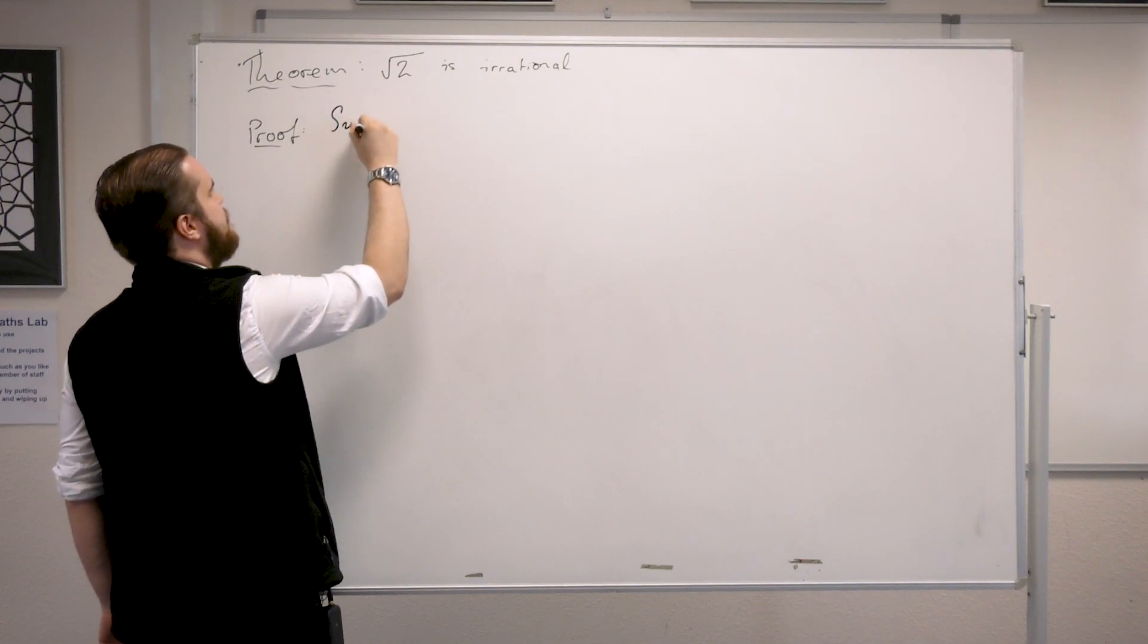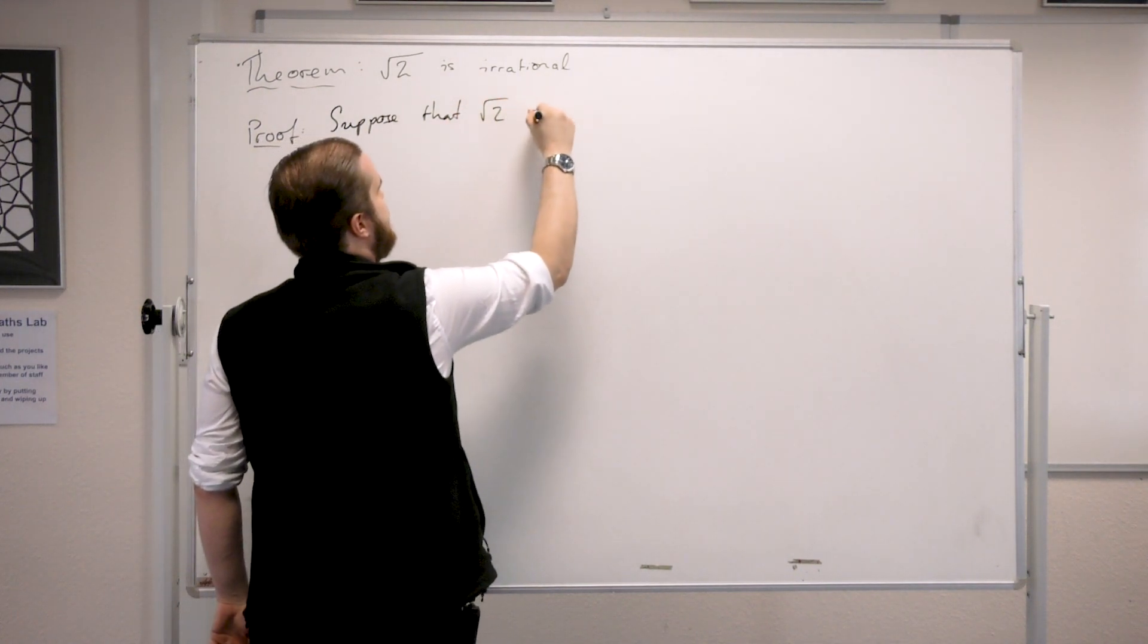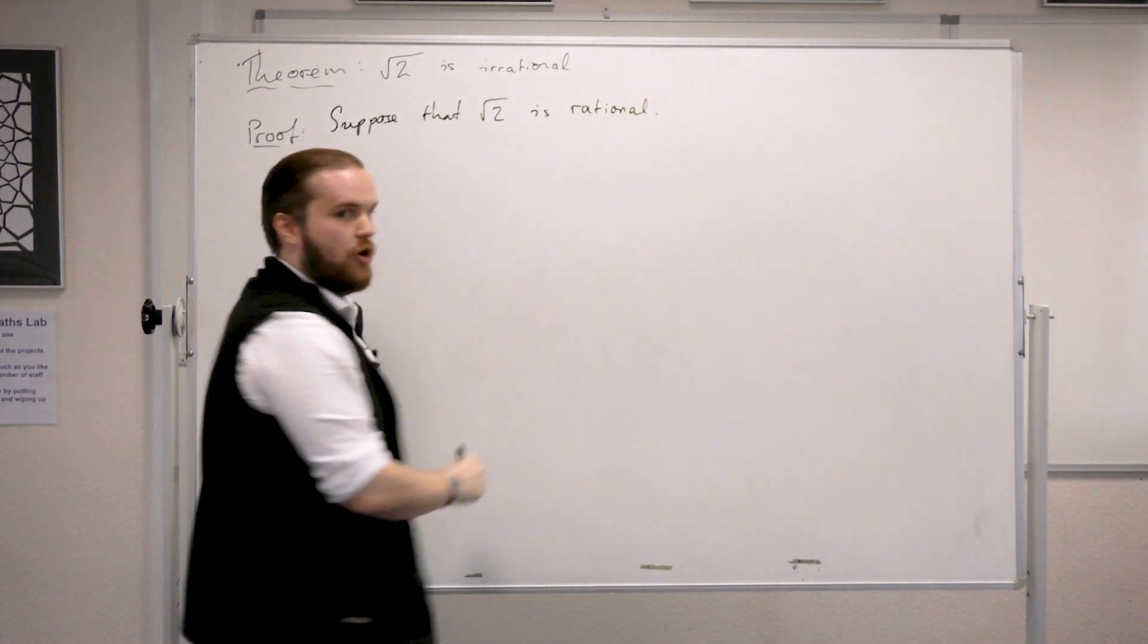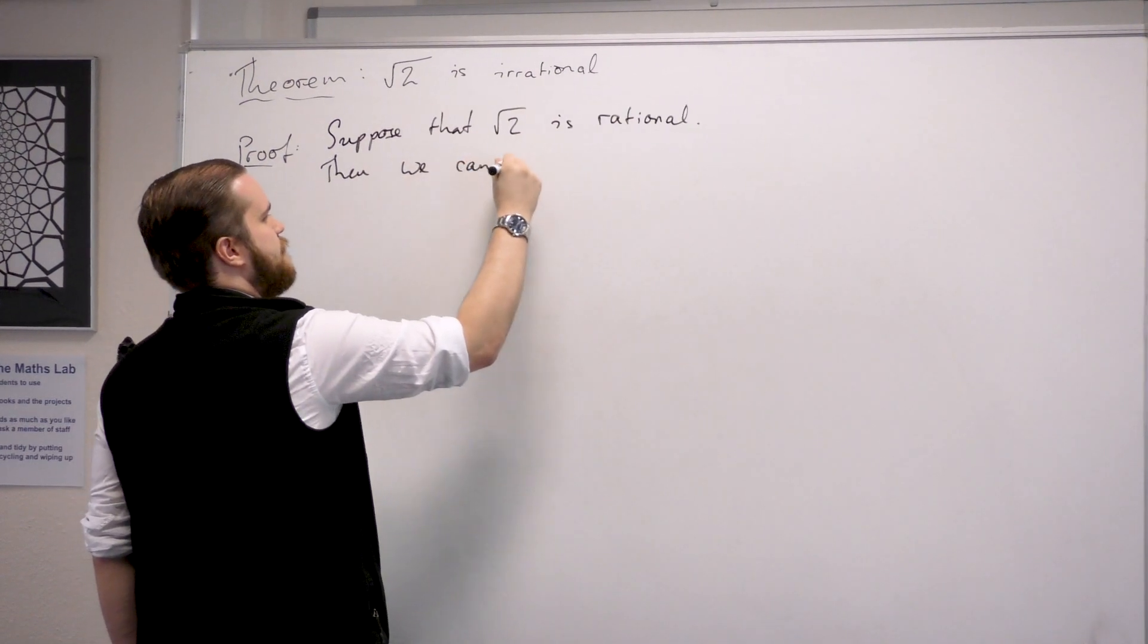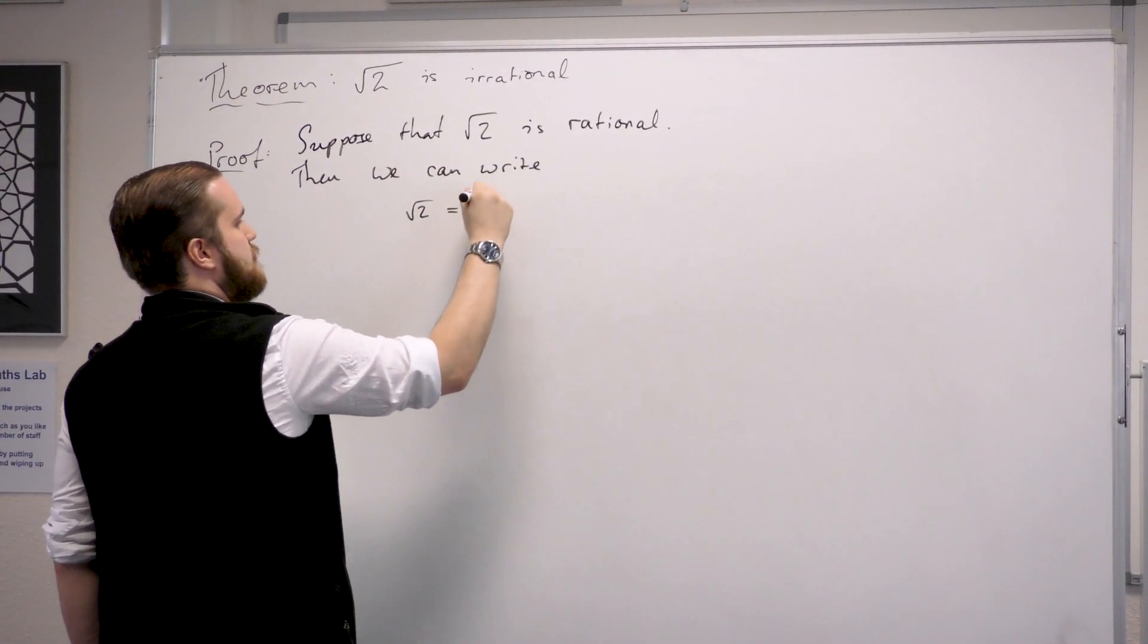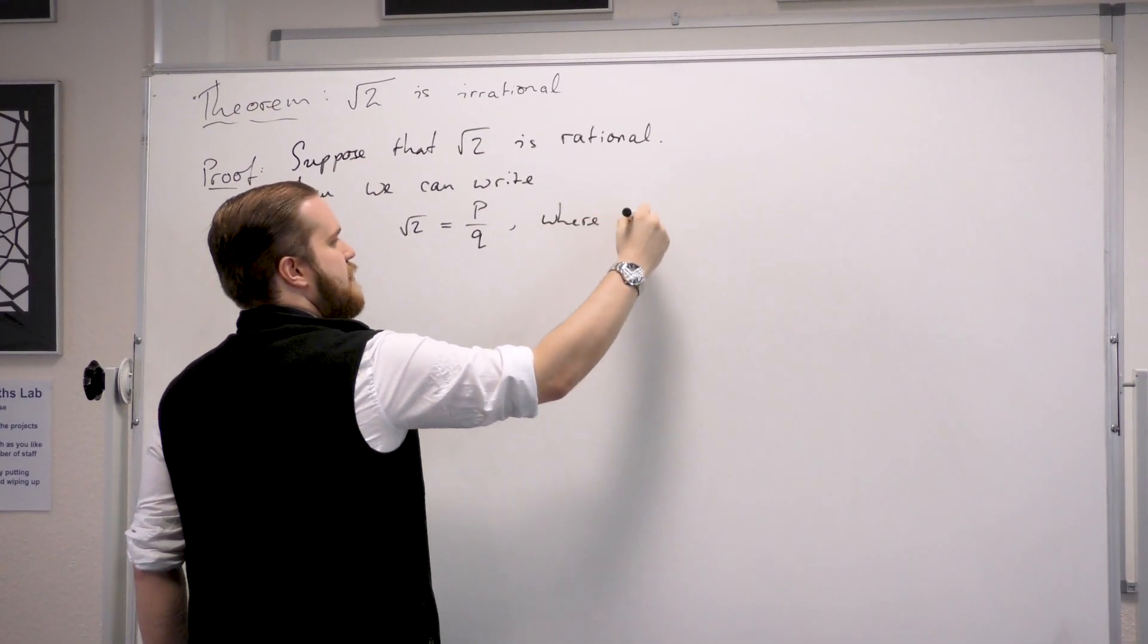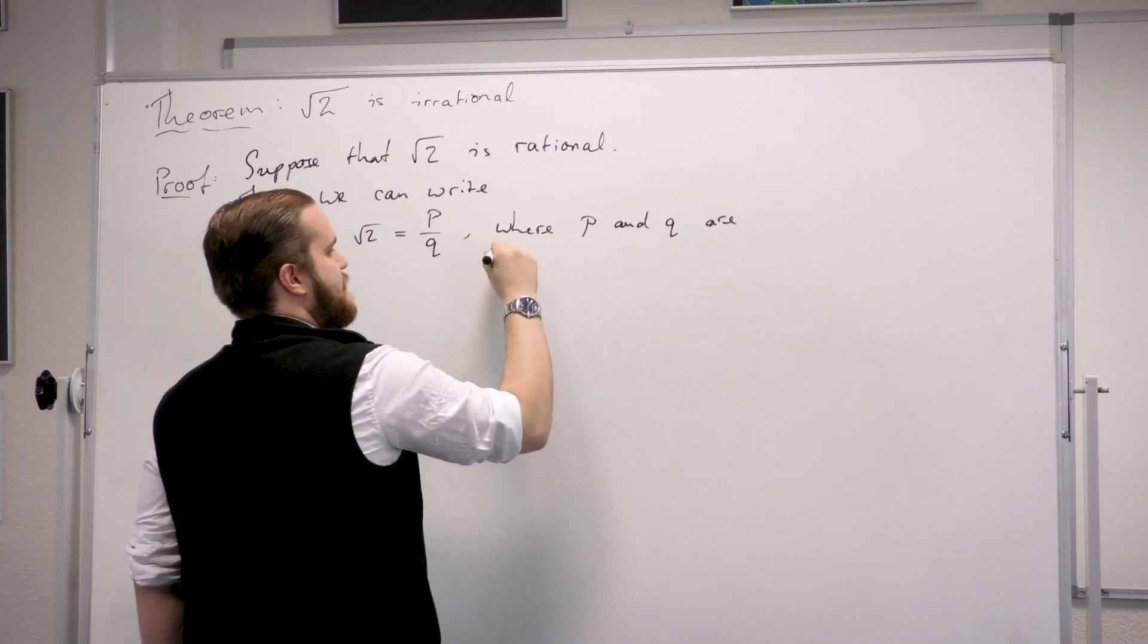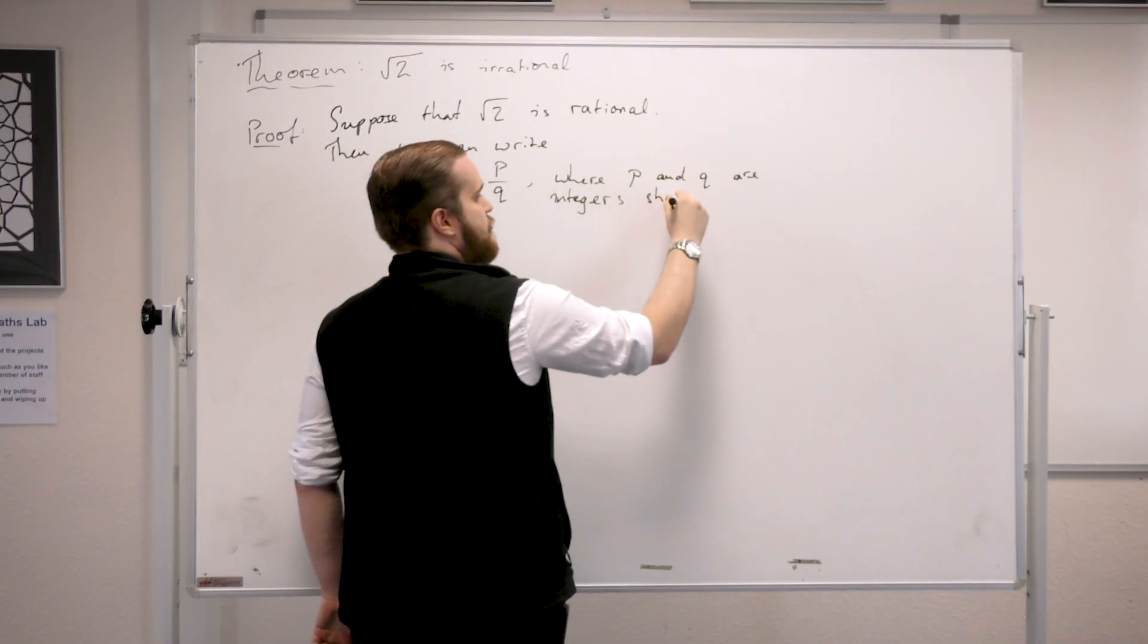So suppose that root 2 is rational, so not irrational, then we can write root 2 equals p over q, where p and q are integers sharing no common factors.